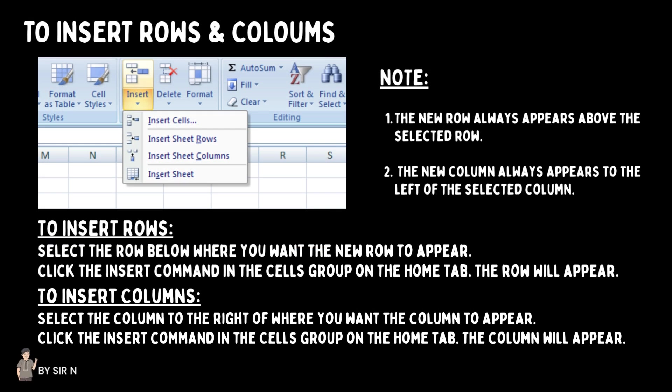To insert rows, select the row below where you want the new row to appear, then click the Insert command in the Cells group on the Home tab and the row will appear. To insert columns, select the column to the right of where you want the column to appear, then click the Insert command. Important note: the new row always appears above the selected row, and the new column always appears to the left of the selected column.